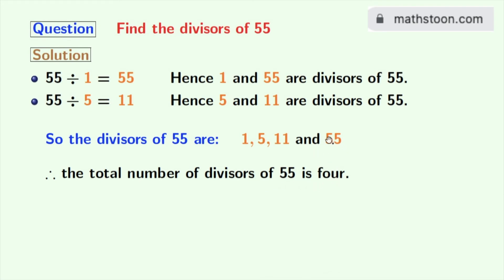Now look that among these divisors 5 and 11 are prime numbers because these two numbers do not have any divisor other than 1 and this number itself. So we can say that the prime divisors of 55 are 5 and 11.